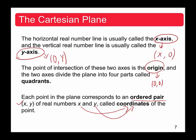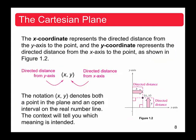Each point in the Cartesian plane has a corresponding x-coordinate and y-coordinate. The x-coordinate represents the directed distance from the y-axis to the point, and the y-coordinate is the distance from the point to the x-axis. These two coordinates together give us the ordered pair for each given point.